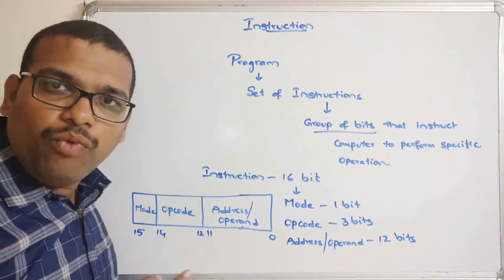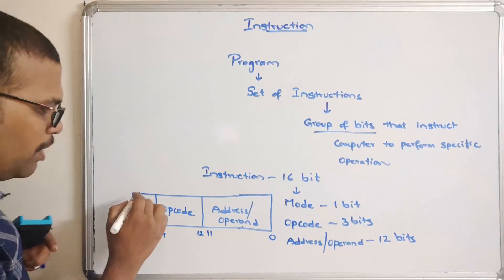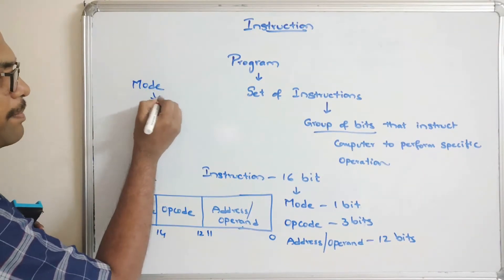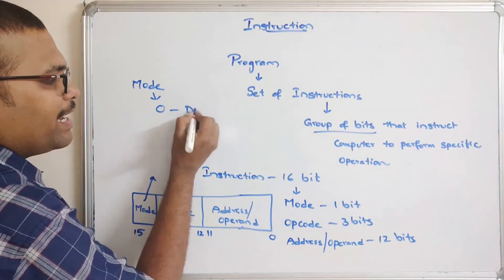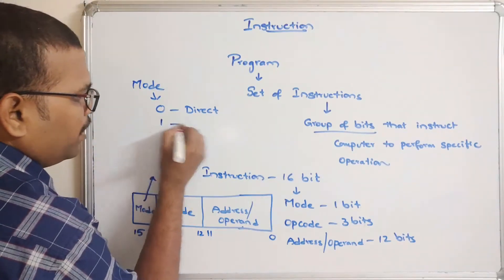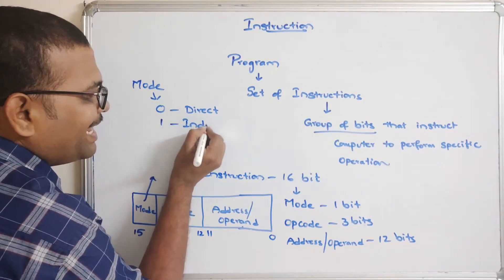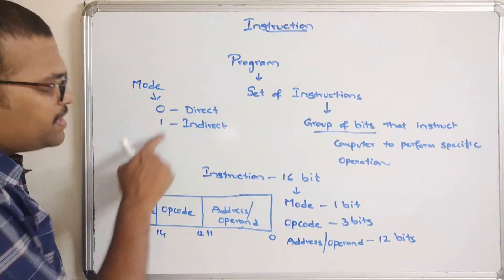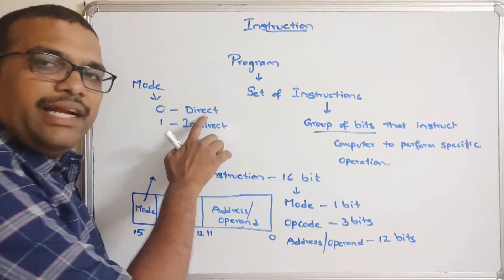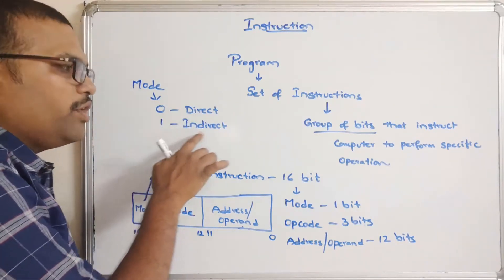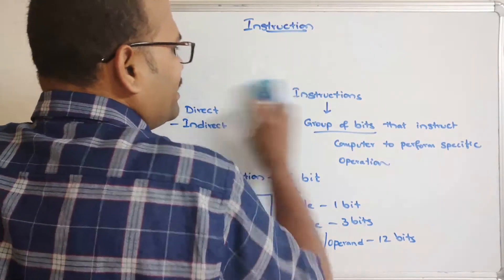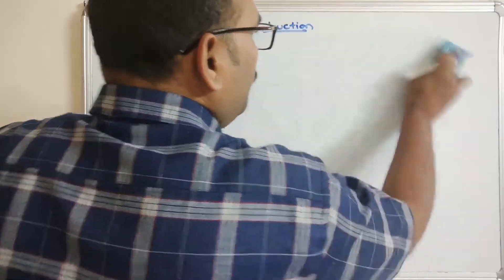Now, coming to the mode: it requires 1 bit to represent. If it is 0, it means direct addressing mode, and if it is 1, that implies indirect addressing mode. So this mode is represented by a single bit — 0 for direct addressing and 1 for indirect addressing.